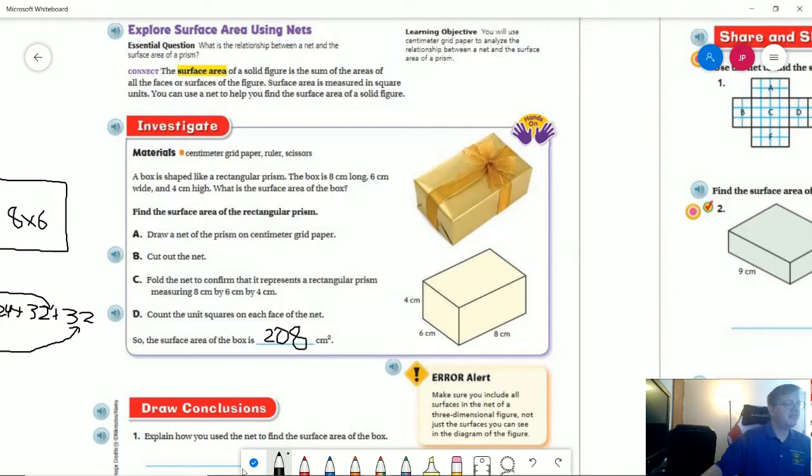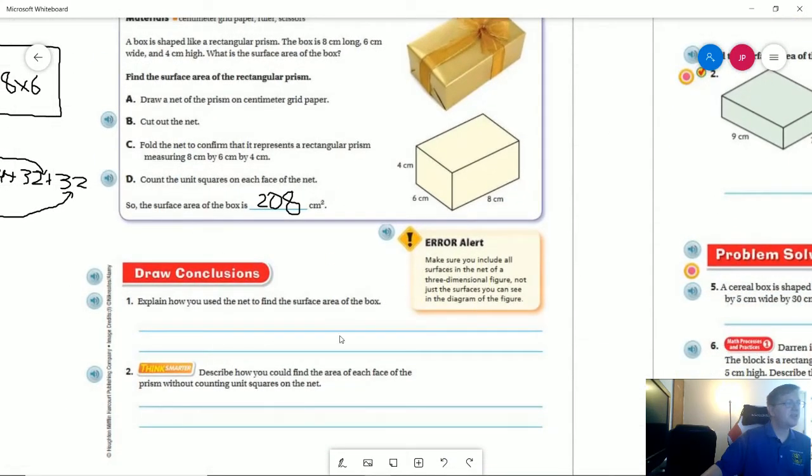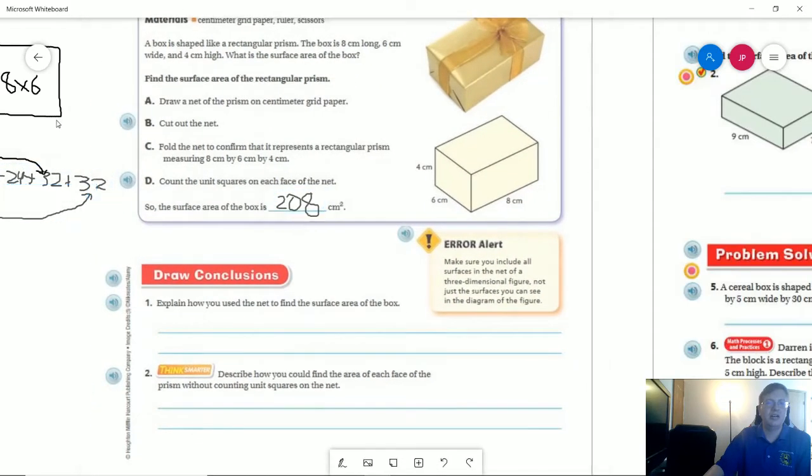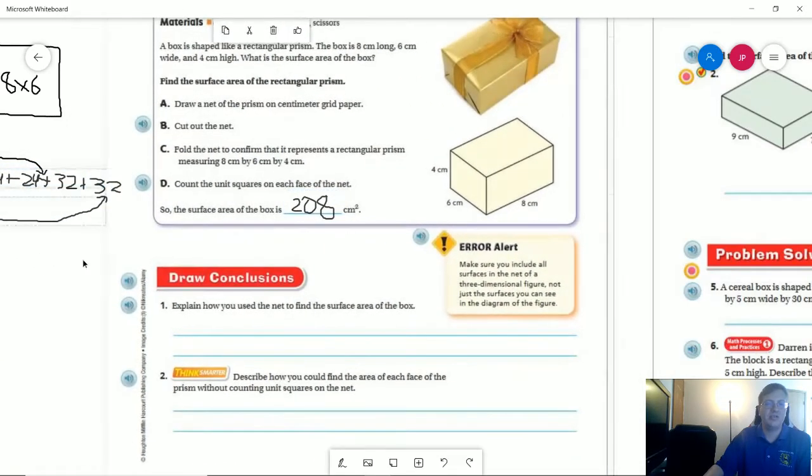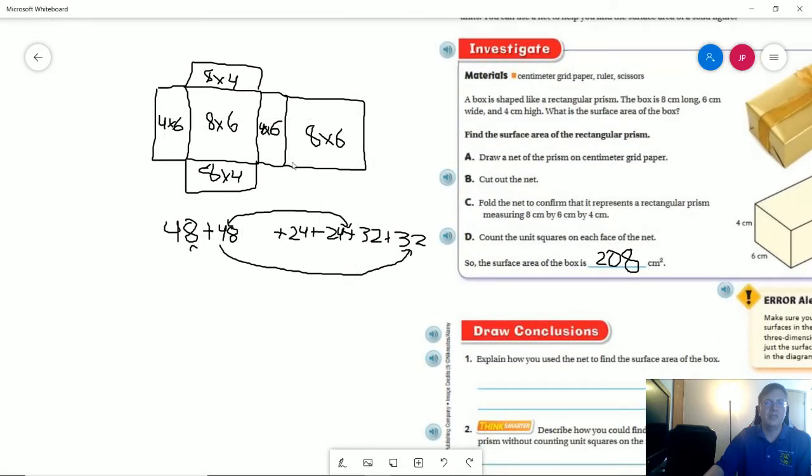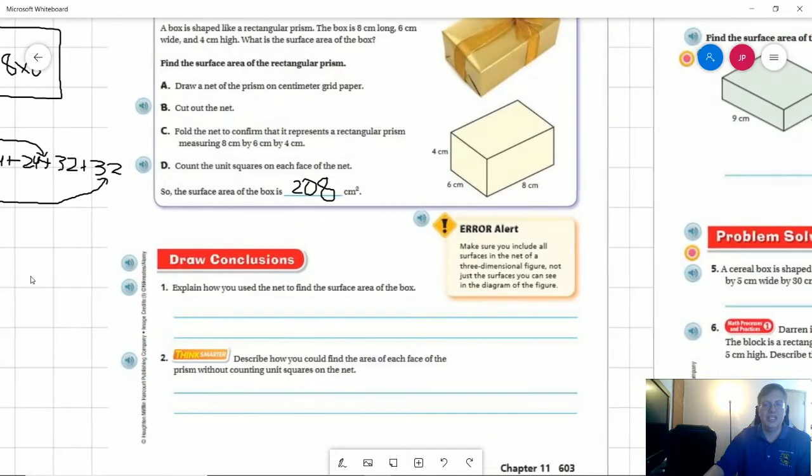And I'm kind of going to talk through this question here real quick. So how did I use the net? So what I did was I used the net to figure out what the shape should look like, and then applied the measurements to it. Made the shape, put the measurements with it, and used that to help me figure out what the answer would be.